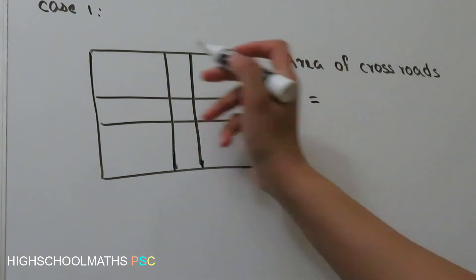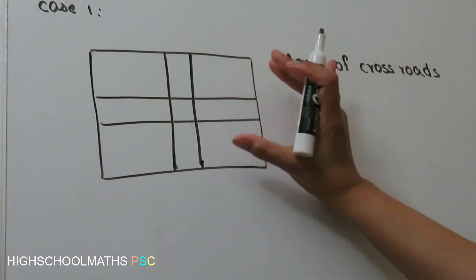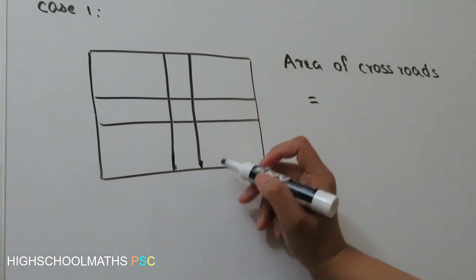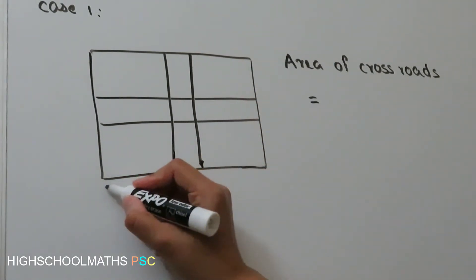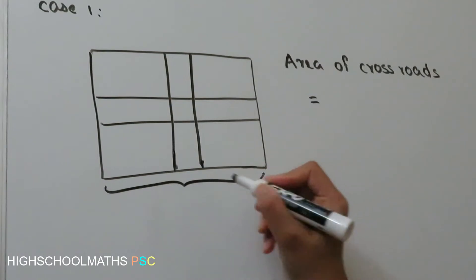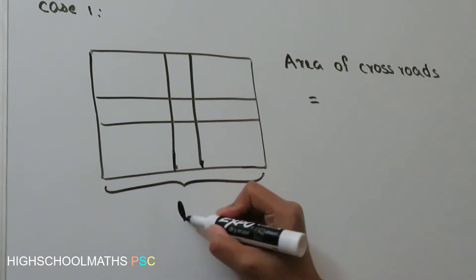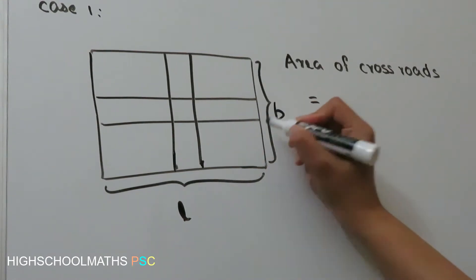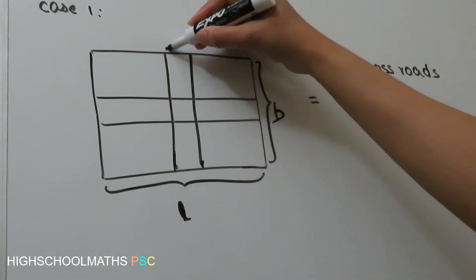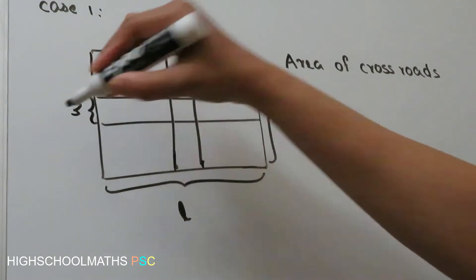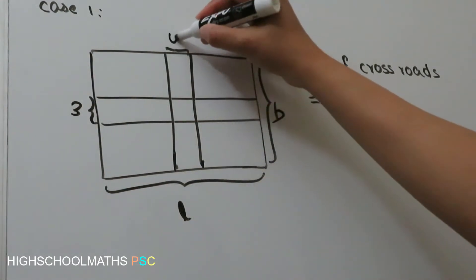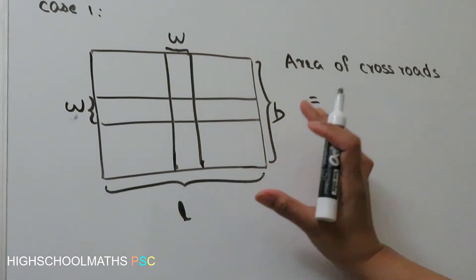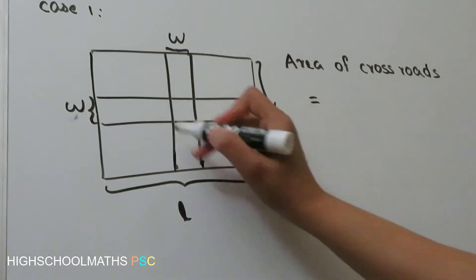First, we are going to take a plot from the middle of the road. We have two cross paths in the middle. The length of the rectangle plot is L, and we are going to take the width as W.